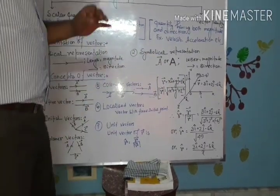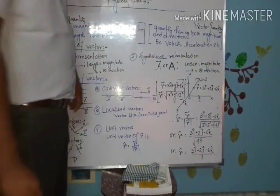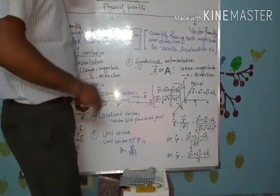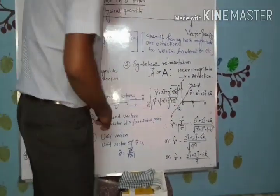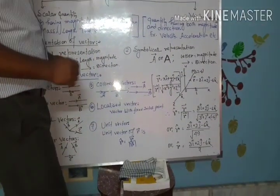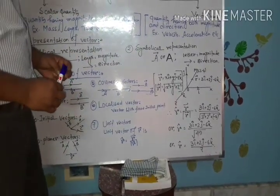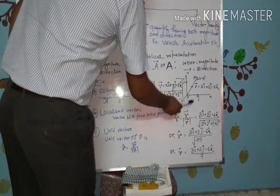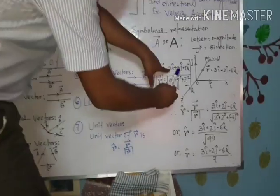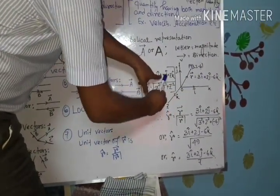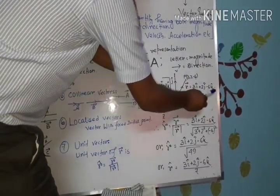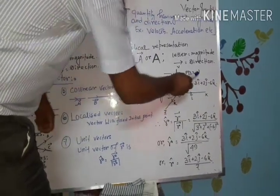Now I give you a particular point: (3, 2, −6). So X equals 3, Y equals 2, and Z equals −6. The vector representation of this point is: R-vector equals 3·i-cap plus 2·j-cap minus 6·k-cap. This is the vector of this particular point.